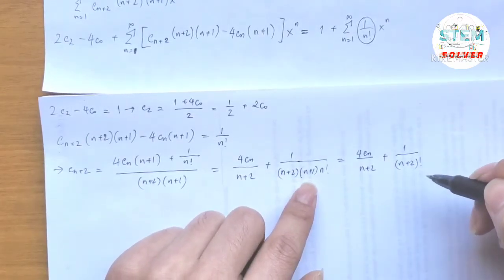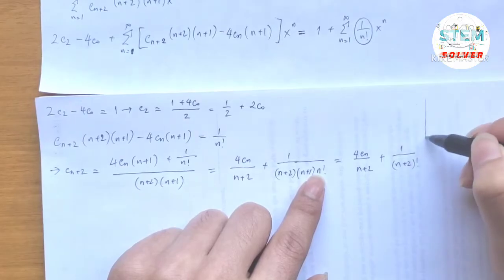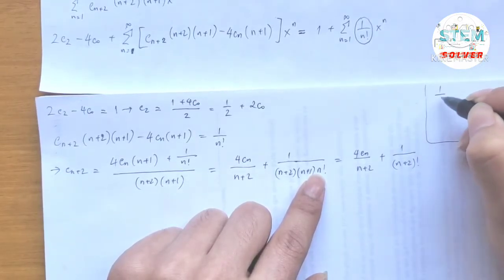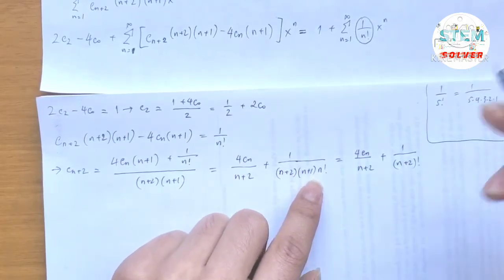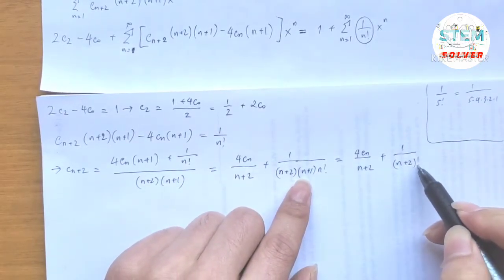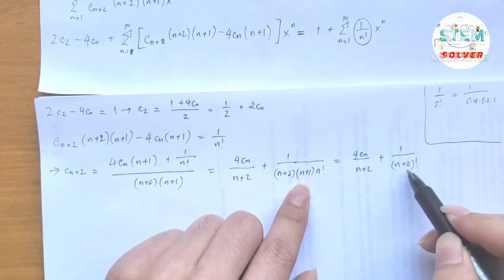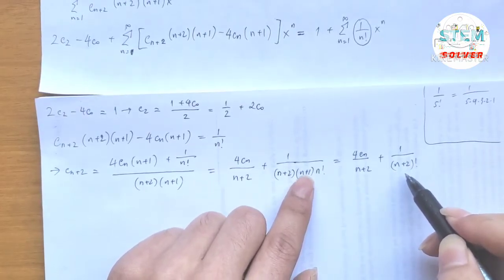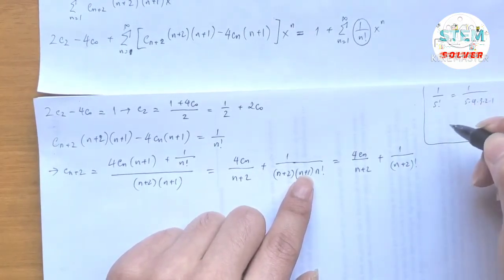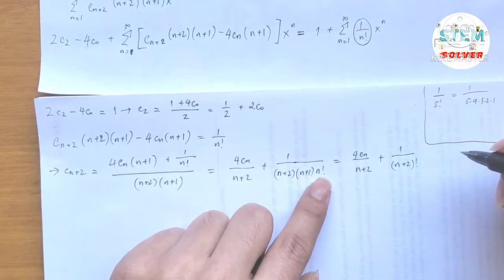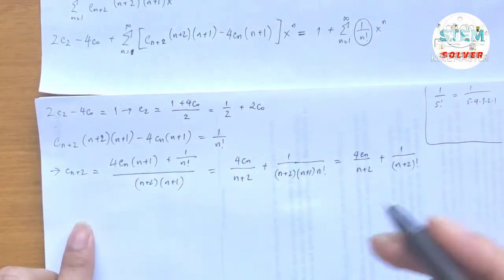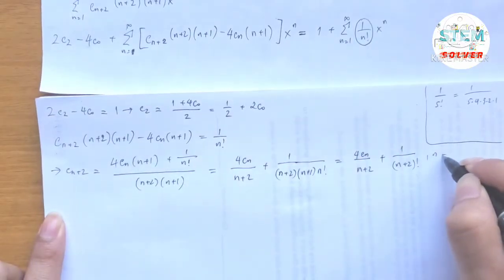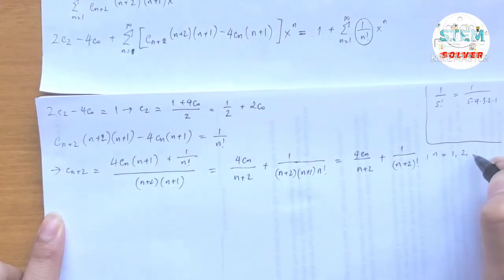To see why: consider 5 factorial equals 5 · 4 · 3 · 2 · 1. Similarly, (n+2) factorial equals (n+2) · (n+1) · n factorial. So the recurrence becomes c_{n+2} = 4 c_n / (n+2) + 1 / (n+2)!, with n starting from 1 to infinity.